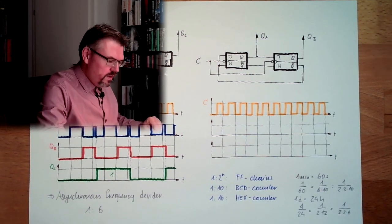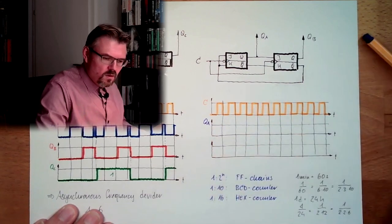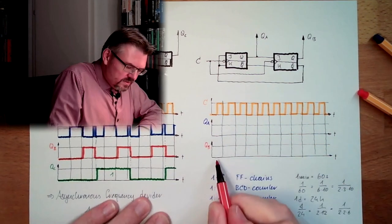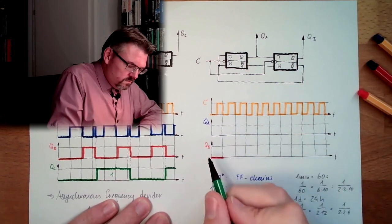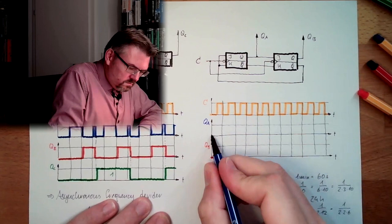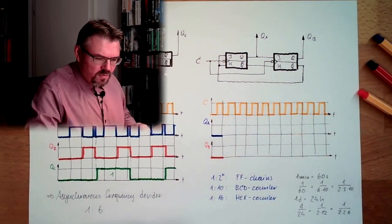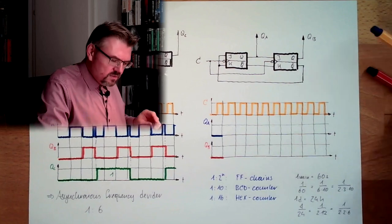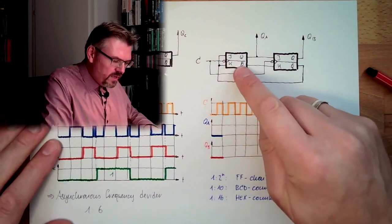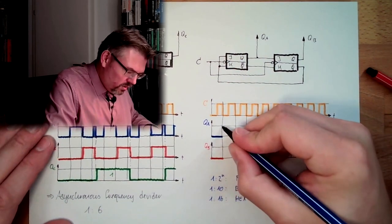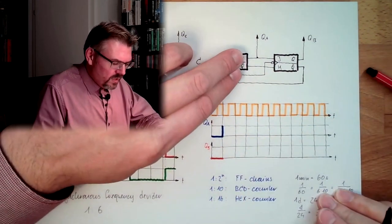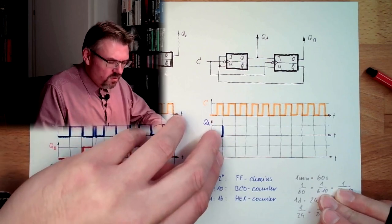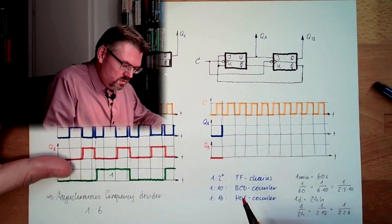So we have here QA, we have here QB. In the beginning everything is zero. What does it mean? Now if this is zero, not Q here is one. So with the first falling edge, this one will toggle. So QA will toggle up. What does this mean? Here, nothing. Because this would just take what was there before. It was zero, zero. So it will stay at zero. It will stay at zero here.